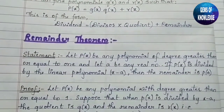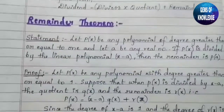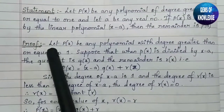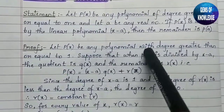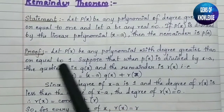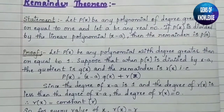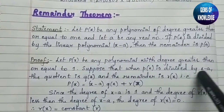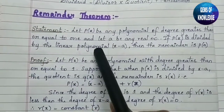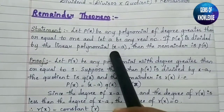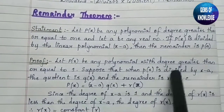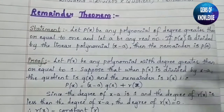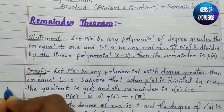For the proof, let p(x) be any polynomial with degree greater than or equal to 1. Suppose that when p(x) is divided by (x − a), the quotient is q(x) and the remainder is r(x).